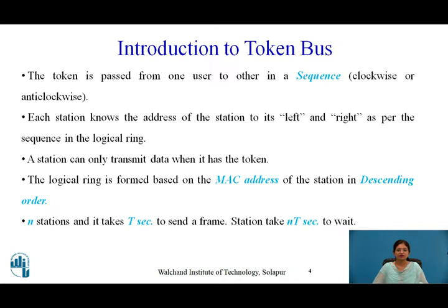The token is passed from one user to another in a sequence, either clockwise or anticlockwise. Each station knows the address of the station to its left and right in the logical ring. A station can only transmit data when it holds the token. The logical ring is formed based on MAC addresses in descending order, so the station with the highest MAC address gets the first chance to transmit data.